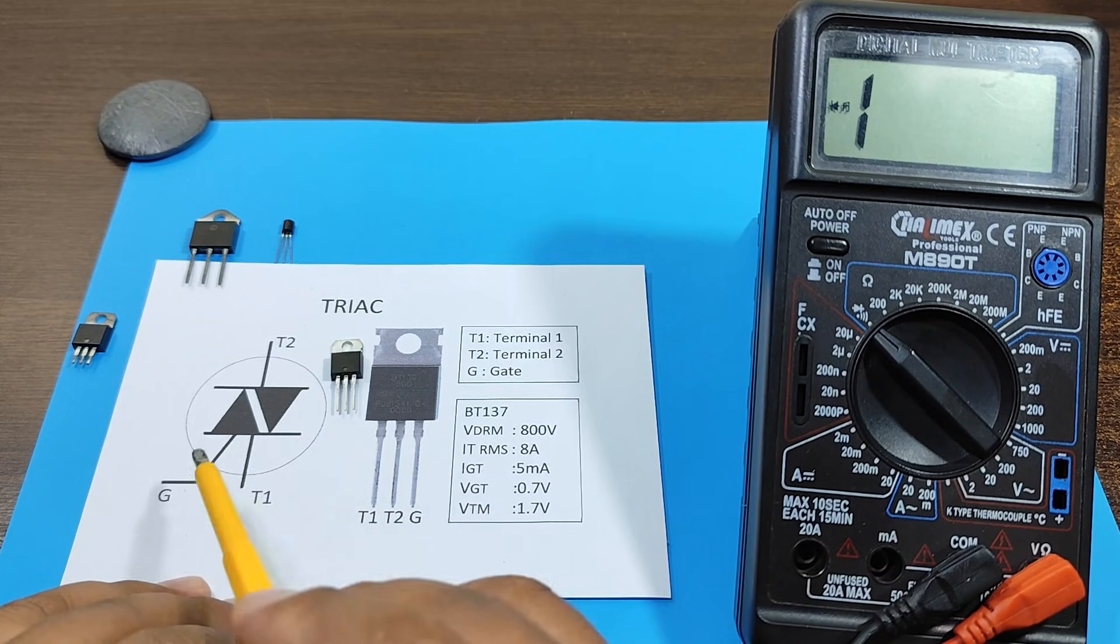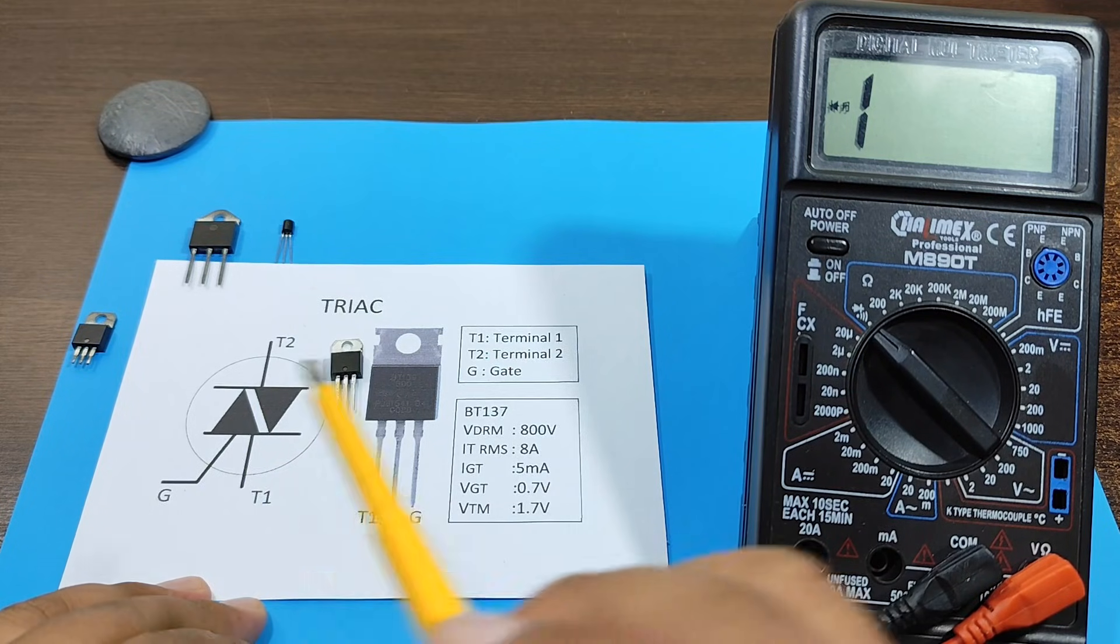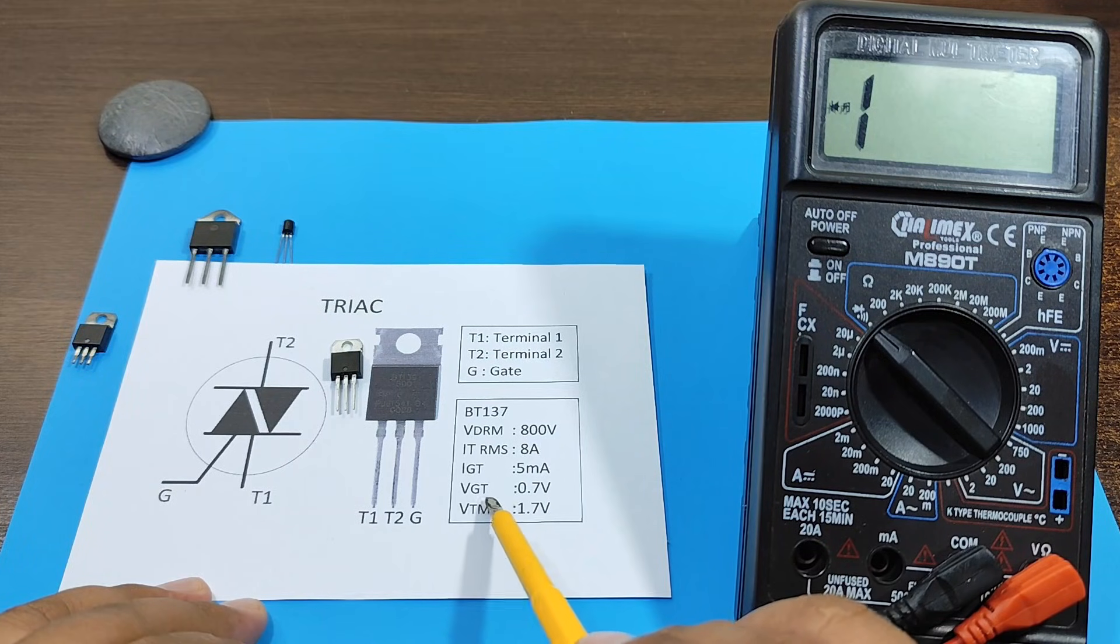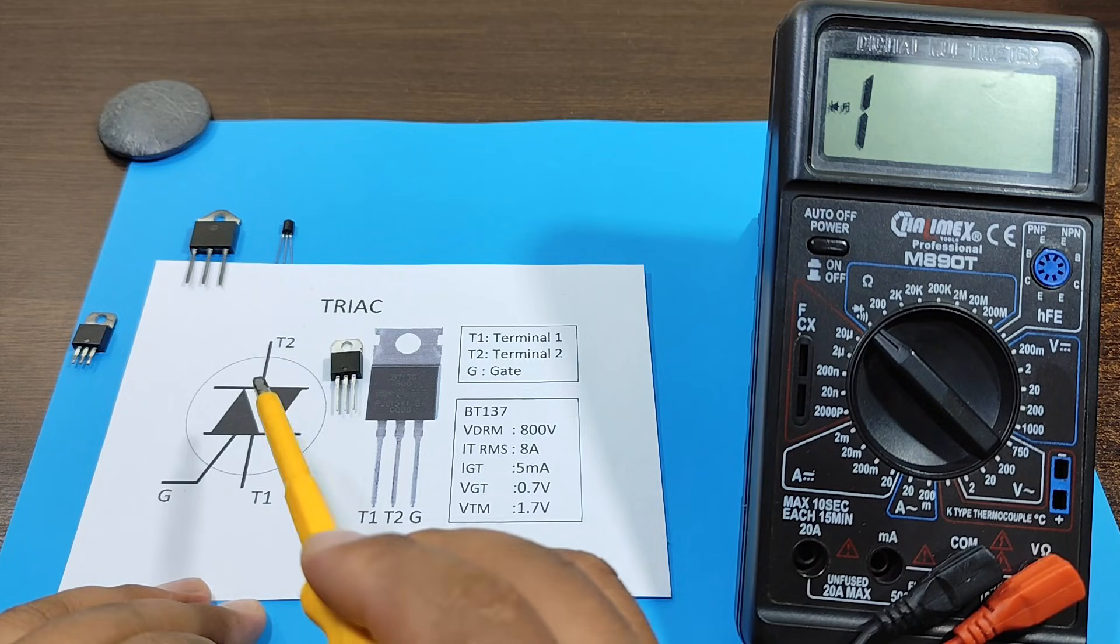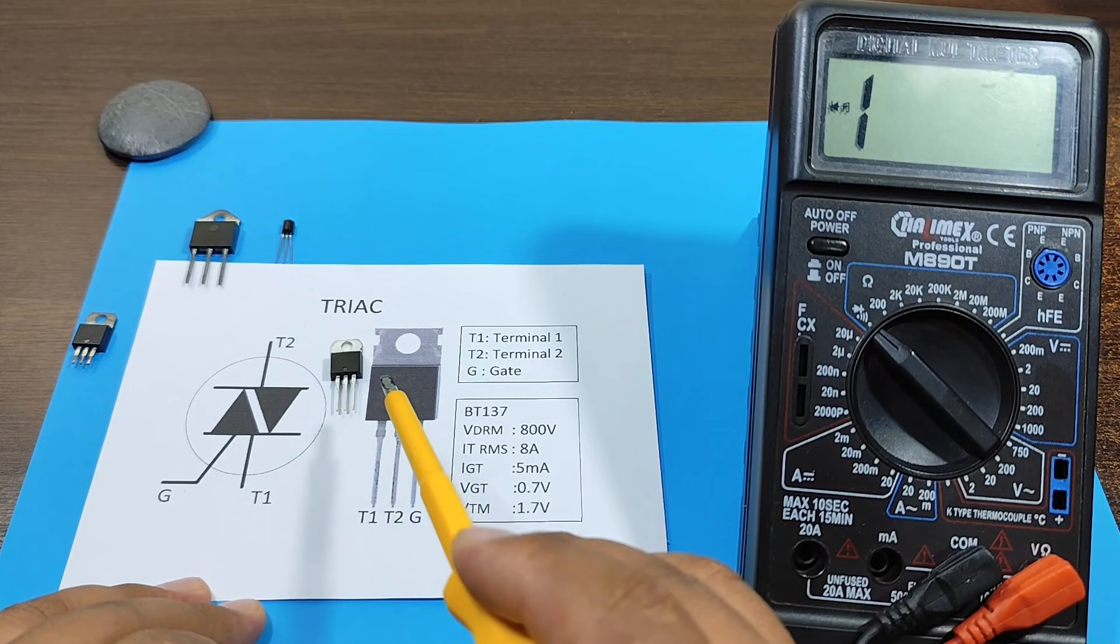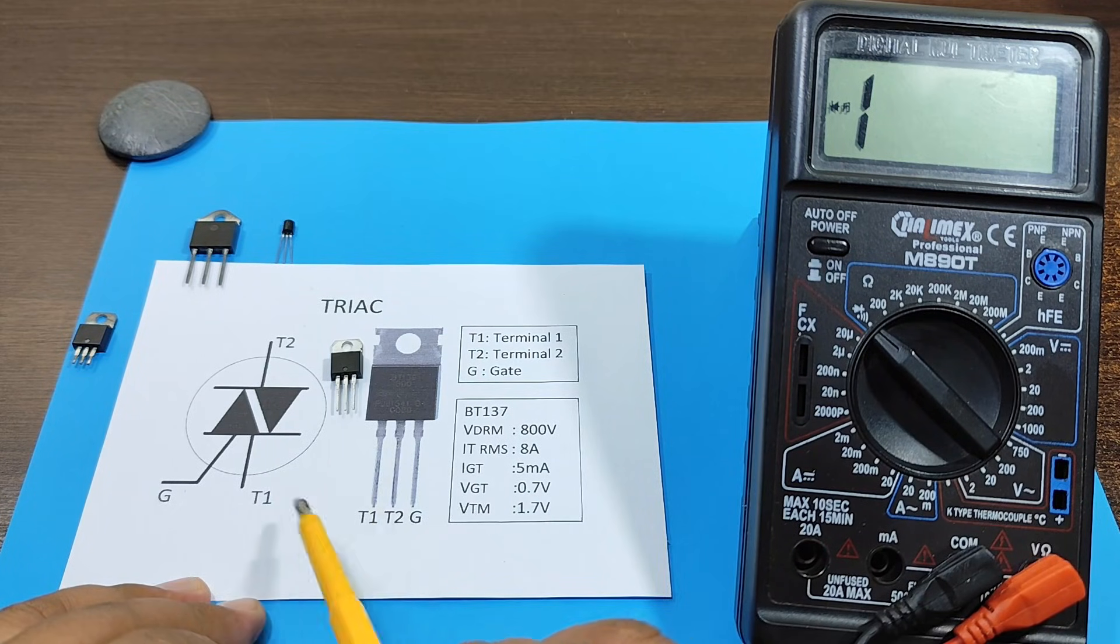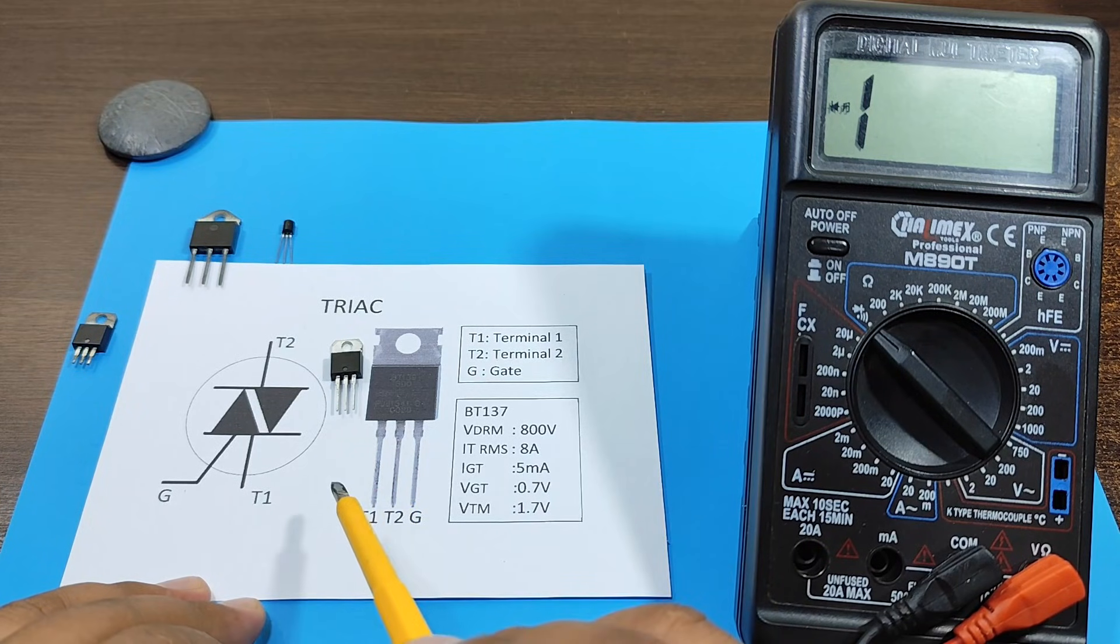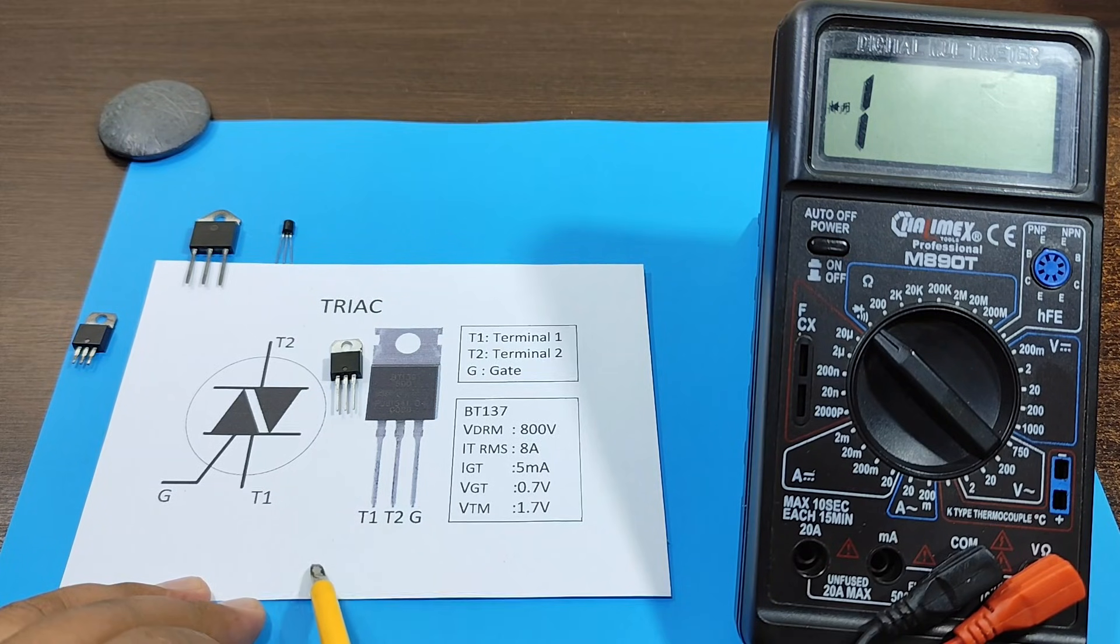That's the current supplied to the gate with respect to T1 for the triac to function. Then we have the trigger voltage. This trigger voltage is the voltage that must exist between the gate and T1 for the triac to function. Since a triac is composed of several BJT transistors, it also needs 0.7 volts, because a BJT transistor needs 0.7 volts between its base and emitter to operate.